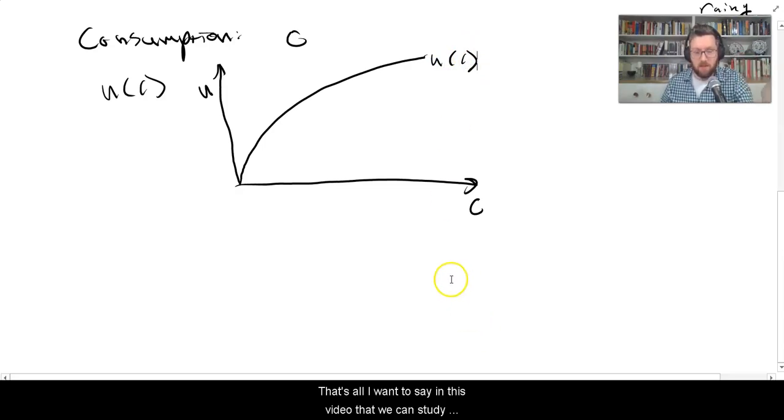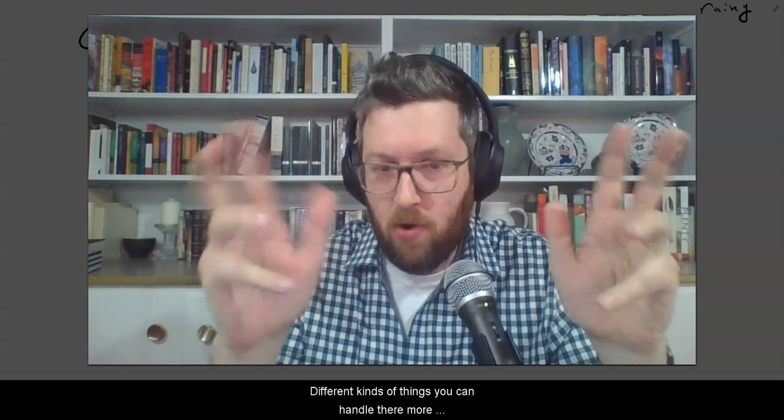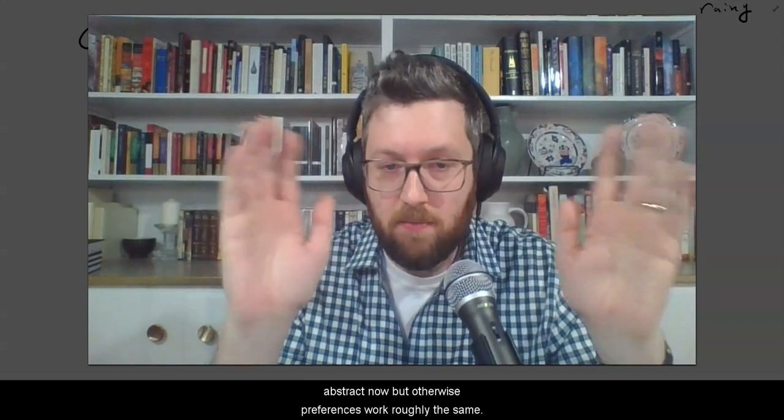That's all I want to say in this video that we can study uncertainty or time using kind of the same framework as before. And instead of the goods being different kinds of things you can handle, they're more abstract now, but otherwise preferences work roughly the same. That's it.